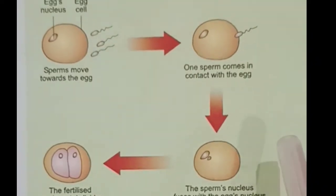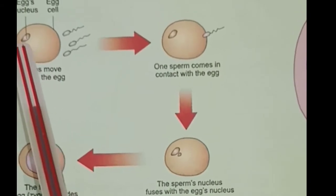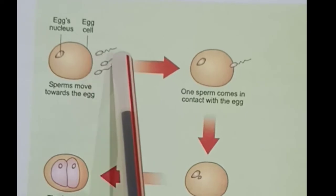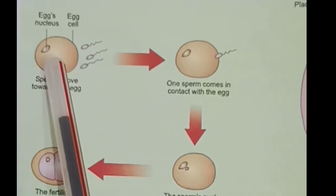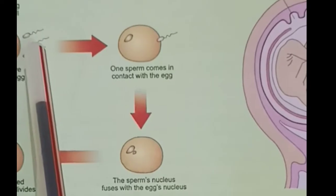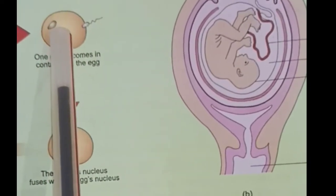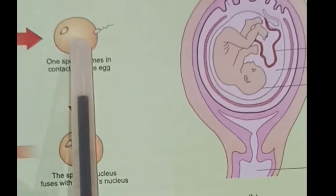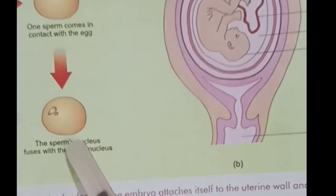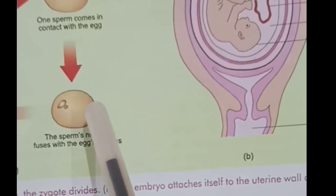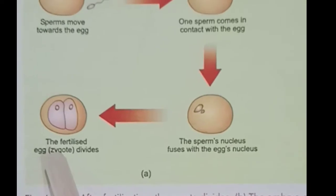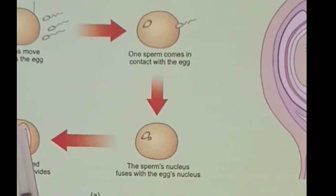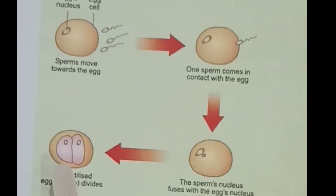As we can see in this diagram, there is an egg with its nucleus, and many sperms approaching it. But at a time, only one sperm fuses with one egg. The fertilized egg is called the zygote. The zygote turns into an embryo, the embryo into a fetus, and the fetus into a baby.